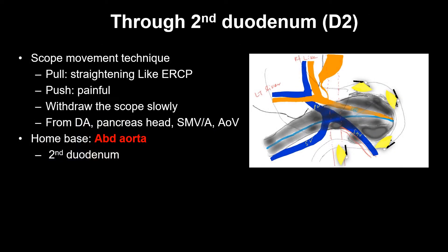Through the second duodenum D2 area, scope movement techniques such as push and foot-tuck push can make patients uncomfortable. We usually use the pull technique, straightening like ERCP. Withdraw the scope very slowly. From the duodenal aorta level, we can see the pancreatic head area at low position. We can see SMV and SMA. We can see the ampulla of Vater area. CBD and main pancreatic duct can be seen in this area. In this area is the home base — the abdominal aorta.